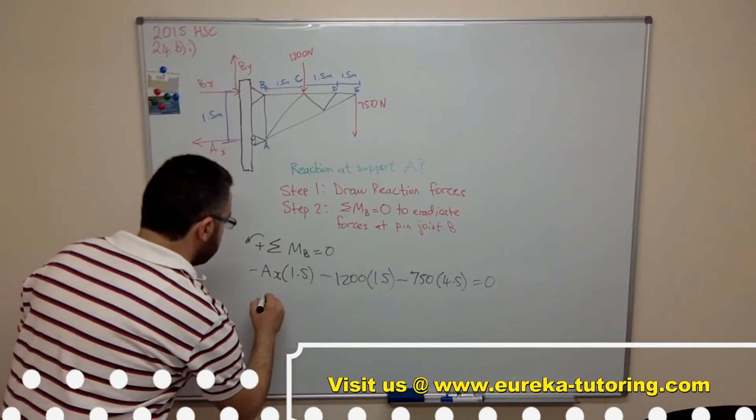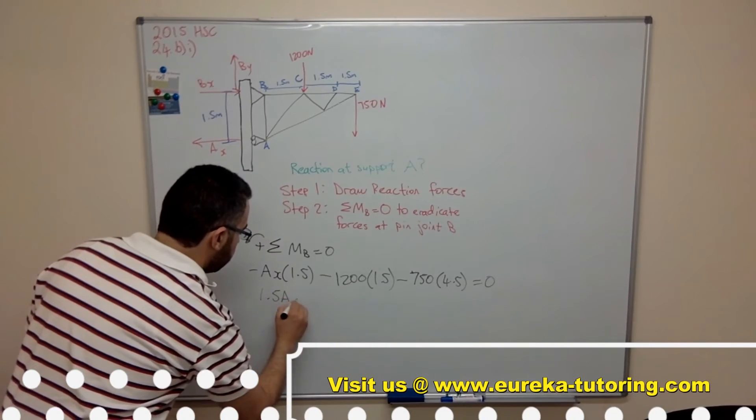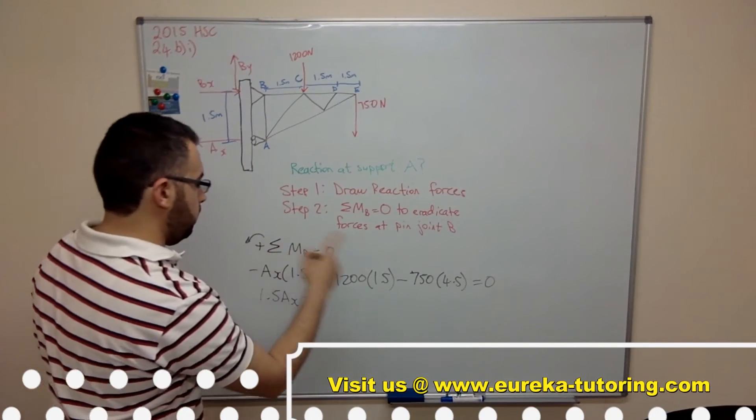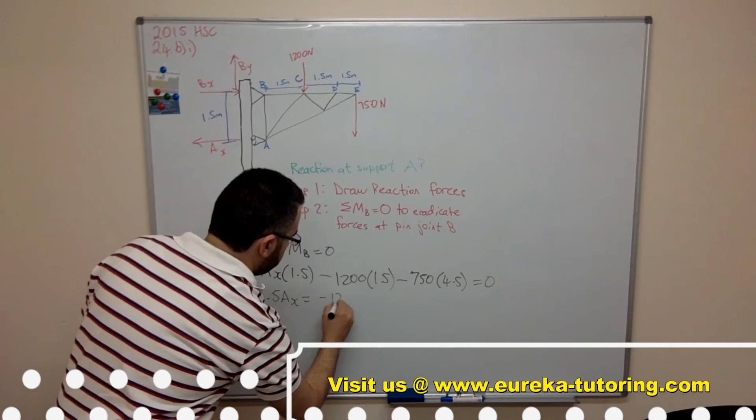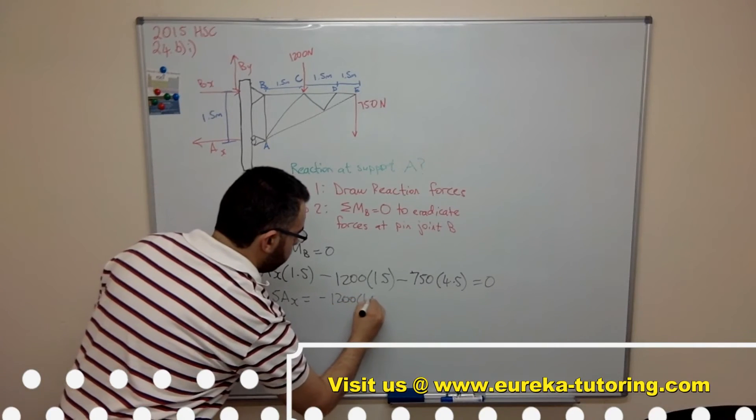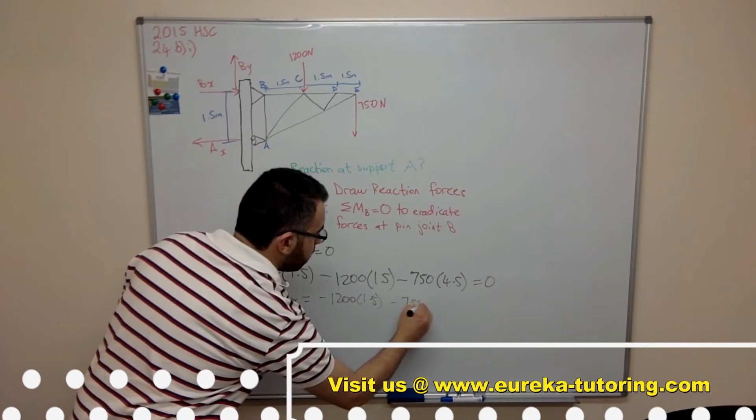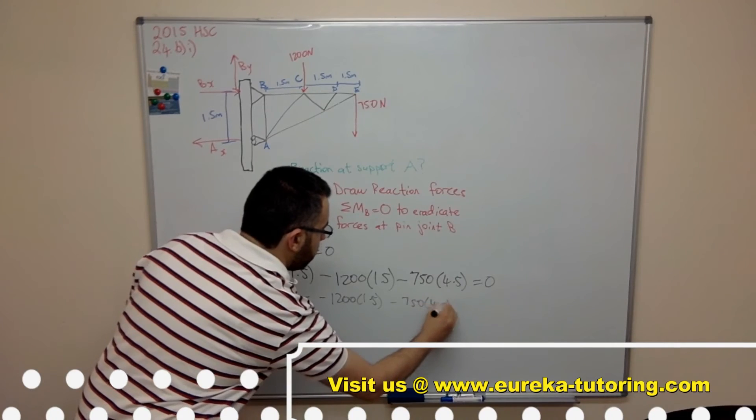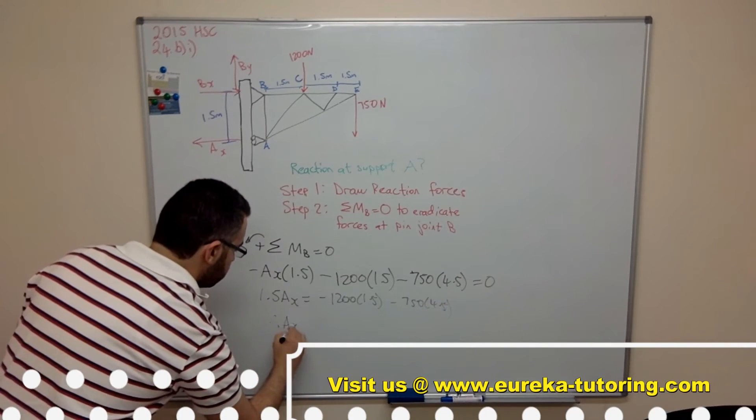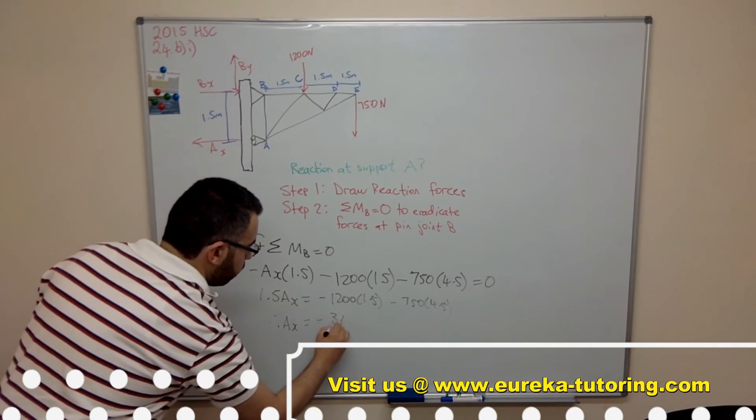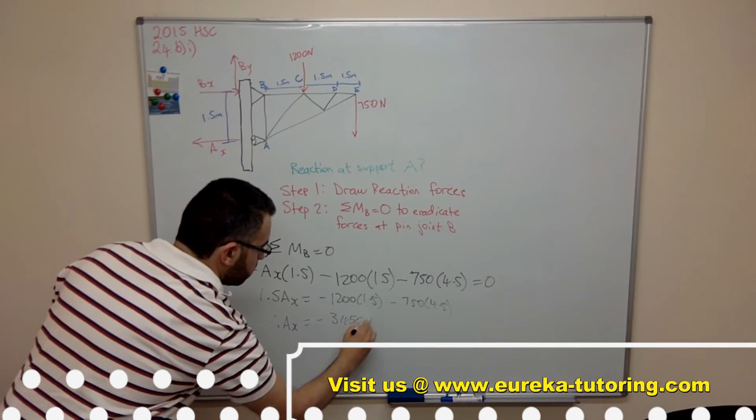Clean it up. Simple mathematics. 1.5 Ax equals negative 3,450 newtons.